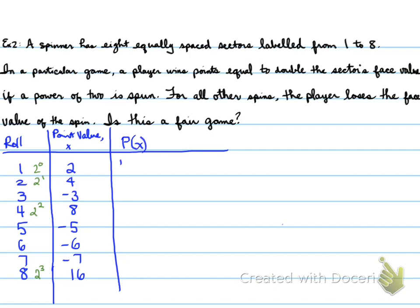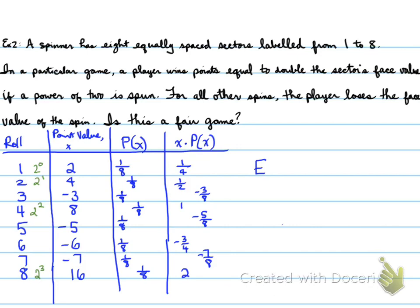Next, we calculate the probability. So I take the probabilities, and I calculate them. It's a one in eight chance of getting each number. And finally, I do x times p(x), and I get two times one over eight, which is one quarter. Four times one over eight, which is one half. Negative three times one over eight is negative three eighths. Eight times one over eight is one. Negative five times one over eight is negative five eighths. Negative six times one over eight is negative three quarters. Negative seven times one eighth is negative seven eighths, and 16 times one-eighth is two.